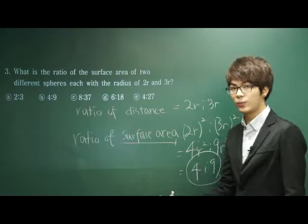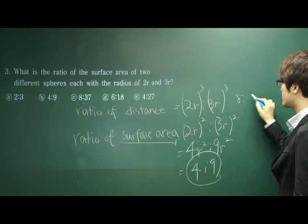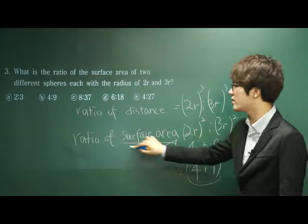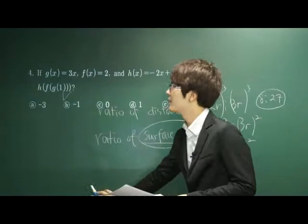What about the ratio of the volume? As you probably know, it is the third power of the ratio of the distances, so it would be 8 to 27. But in this case we are looking for the ratio of the surface area. Therefore the answer is 4 to 9. B is our correct answer.